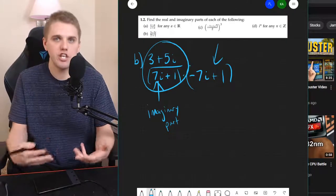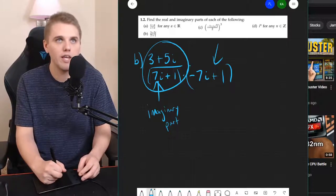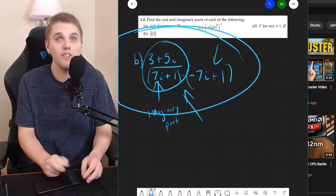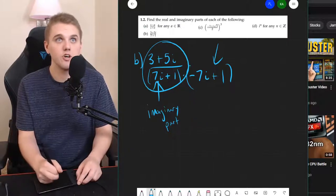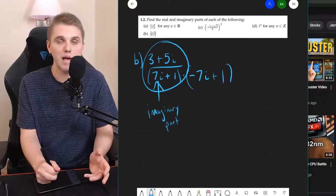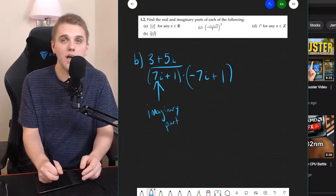Because that will change the number. I'm trying to figure out what this is, not what this is, just what this is. So I can't just multiply by negative 7i plus 1.